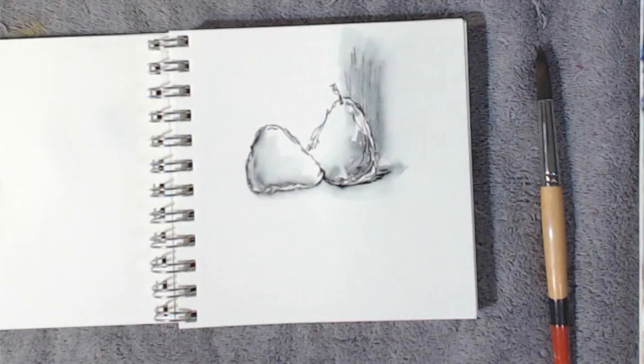In the last video we did line and wash in a very simple form with a water-soluble line, using water to pull out some of the color and give a sense of shading and form.